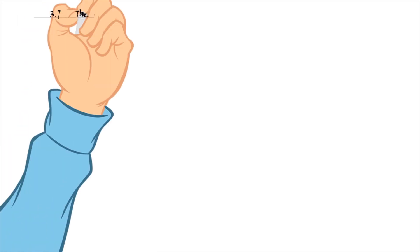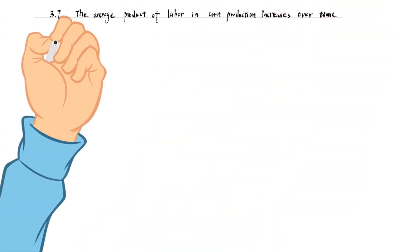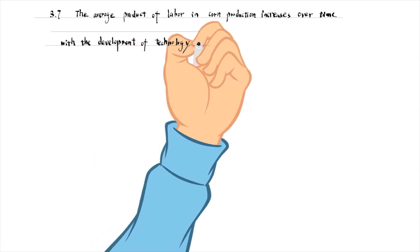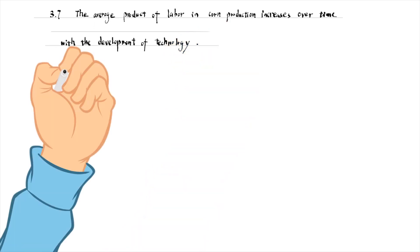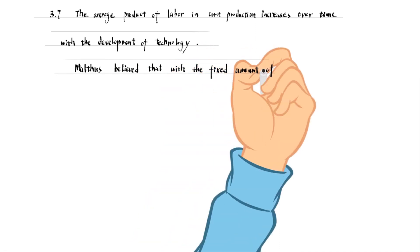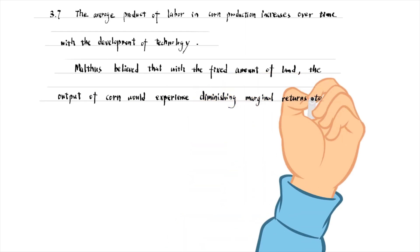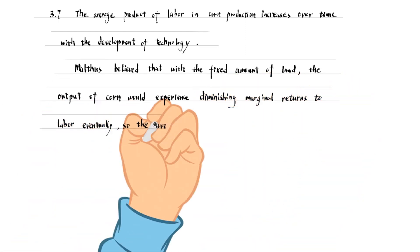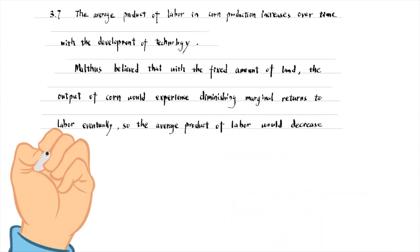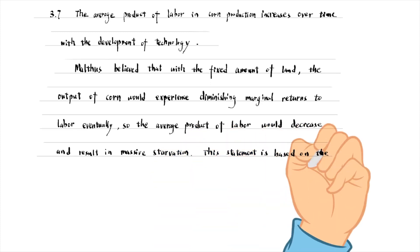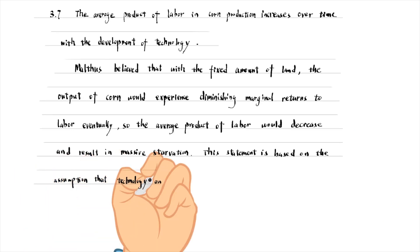The average production of labour in corn production increases over time with the development of technology. The output of a US farm worker today is more than double that of an average worker just 50 years ago. Malthus believed that with the fixed amount of land, the output of corn would experience diminishing marginal returns to labour eventually, so the average product of labour would decrease and result in massive starvation. This statement was based on the assumption that technology and other inputs are unchanged.